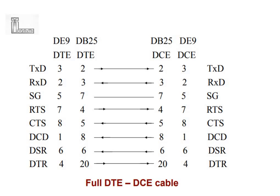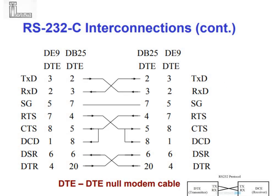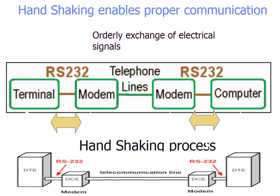When you use DTE-DTE communication you must use a null modem cable. If you want to use all wires with hardware handshaking, you can, but most of the time only three wires are needed for a null modem cable. You can see a telecommunication setup showing how data is sent through telephone wires between a terminal and a computer, and how DTEs and DCEs are configured in that communication system.